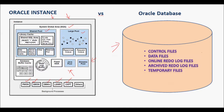Oracle database is a collection of files that are located in the hard drive. It contains control files, data files, online redo log files, archived redo log files (which is optional), and temporary files, which are used by temporary tablespaces.